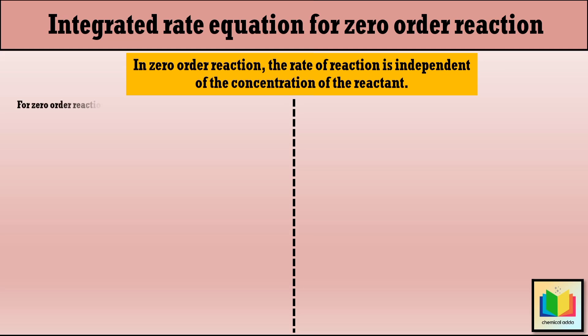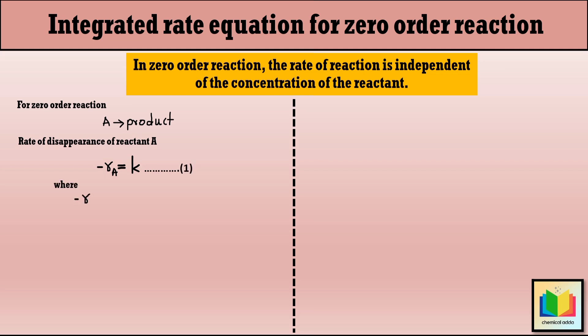Let's have a zero order reaction which is represented by: A gives product. Therefore, for zero order reaction, the rate of disappearance of reactant A can be written as: minus R_A is equal to K (equation number 1), where minus R_A is the rate of disappearance of A, and K is the reaction rate constant.